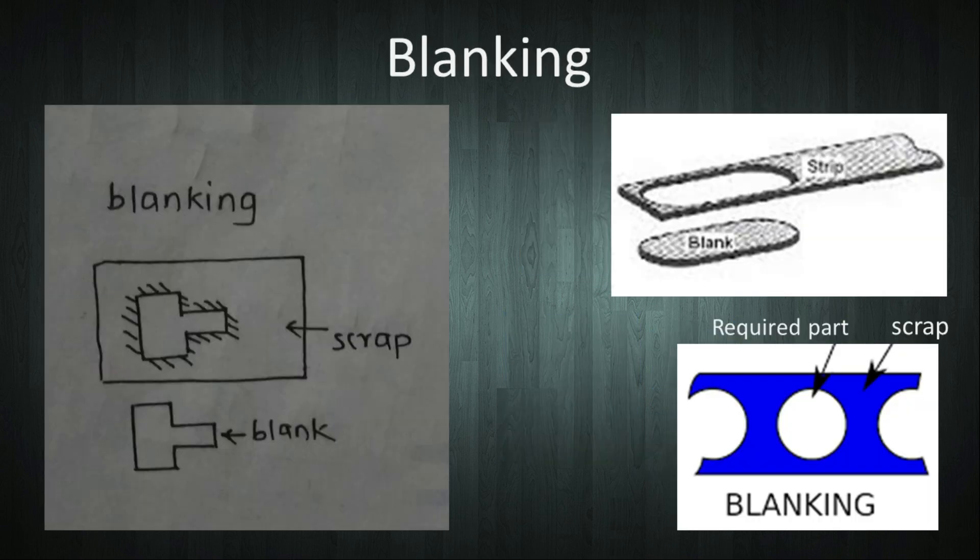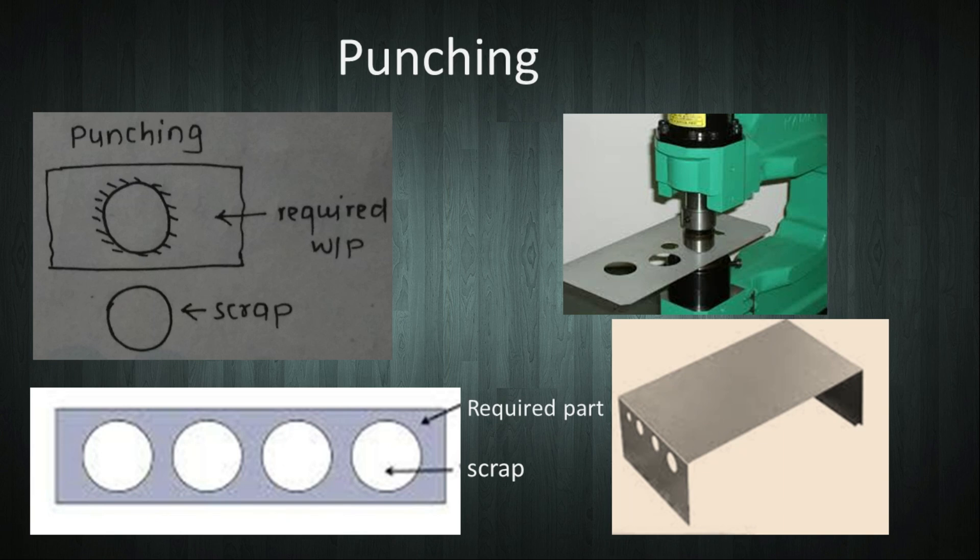Next is blanking. In blanking, a blank of workpiece is cut down by leaving scrap outer sheet metal. The material which is cut down is called as blank, which is the required workpiece. Hence, this operation is called as blanking.